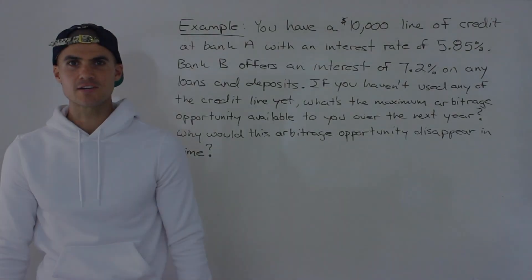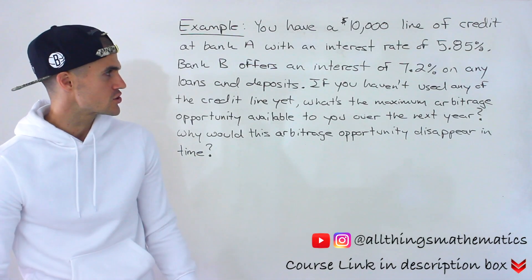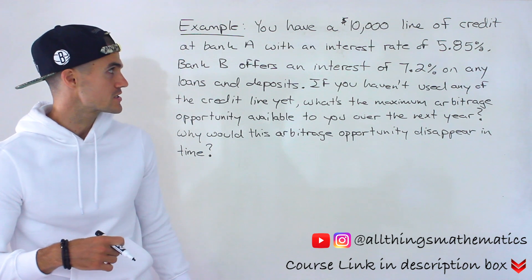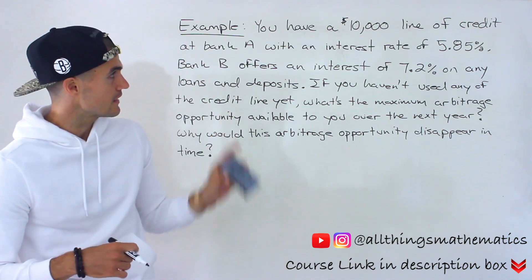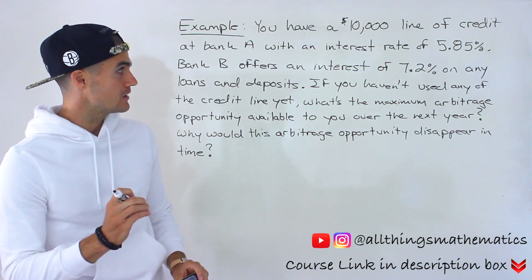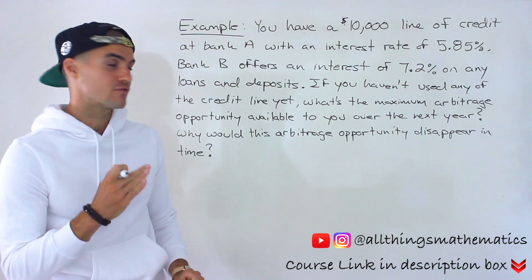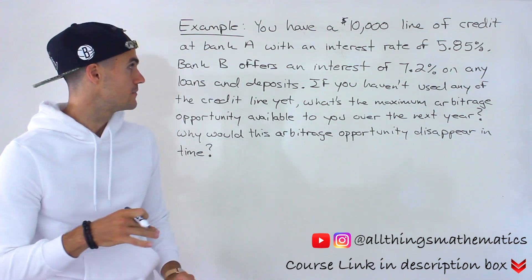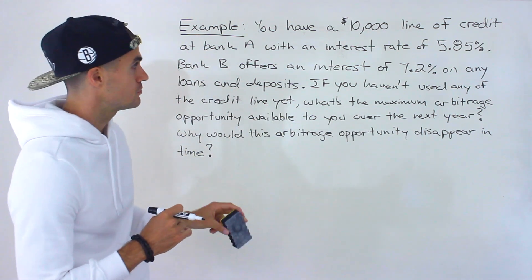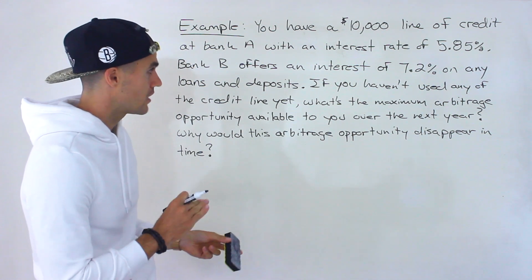Welcome back everyone, Patrick here. Moving on to the next question, dealing with valuation. You have a $10,000 line of credit at Bank A with an interest rate of 5.85%. Bank B offers an interest rate of 7.2% on any loans and deposits.